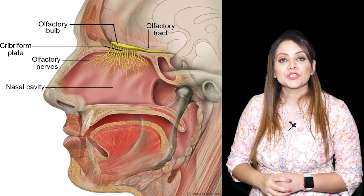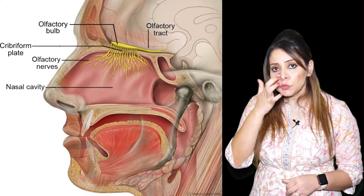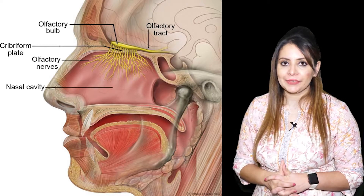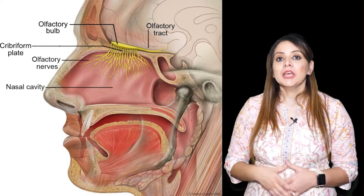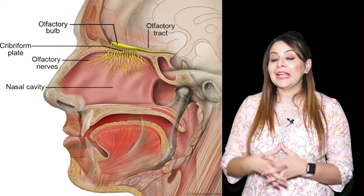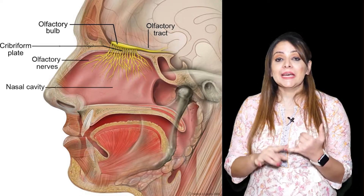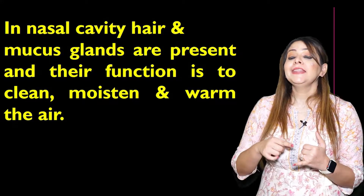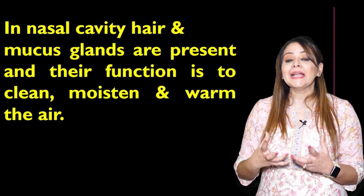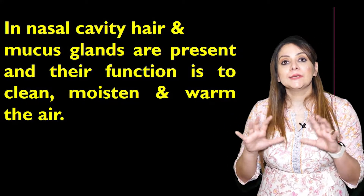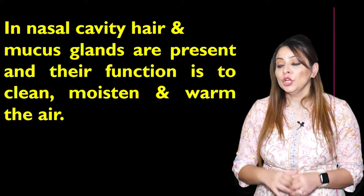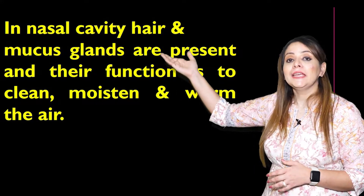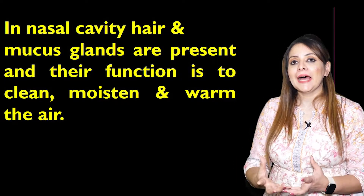Nostrils lead into a cavity called the nasal cavity — the hollow space present in the nose. Inside the nasal cavity we have hairs and mucus glands, whose function is to warm, moisten, and filter the air we inhale so that it is free of microorganisms. Harmful microorganisms should not enter along with the air. Warming and moistening also helps increase the rate of diffusion.